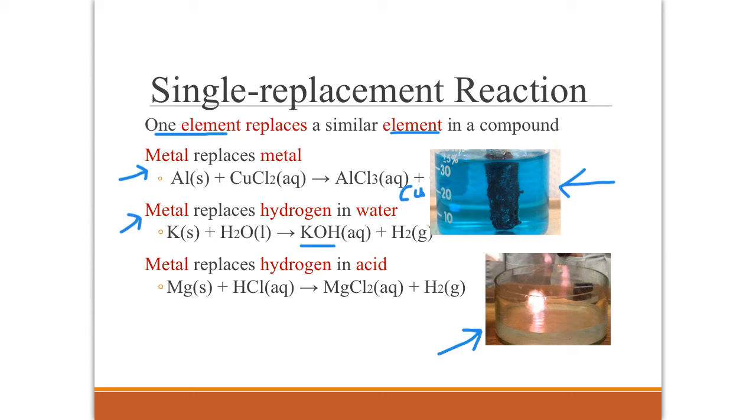And then in a similar type reaction, metal can replace hydrogen in an acid. In this case, hydrogen is given off, but we see it only as bubbles. We don't see any flames. So the example I have here is magnesium reacting with hydrochloric acid to produce magnesium chloride and hydrogen gas.